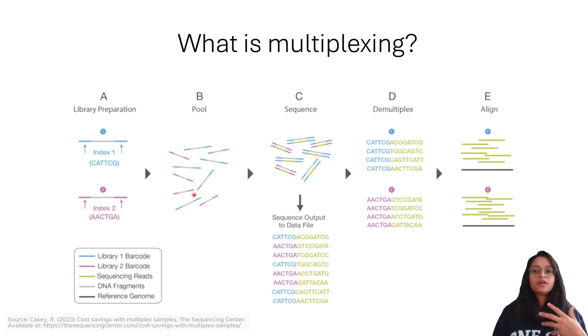In the next step, we do something called pooling the samples, which is mixing or combining multiple DNA libraries or samples into a single mixture before sequencing. After pooling the libraries, we move ahead with the sequencing and get the sequencing output, basically reads into a data file. Using these indexes or unique barcodes, the demultiplexer algorithm sorts these reads according to the indexes.